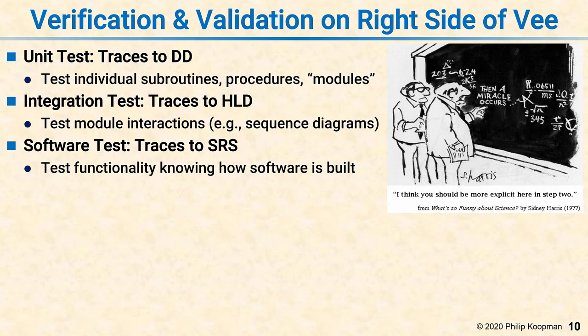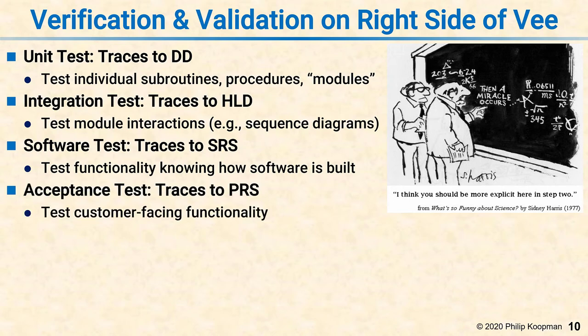Beyond that is the acceptance test. That traces to the product requirement spec. So the software test is an engineering test — does the software do what we wanted it to do? The acceptance test tells you whether the customers are happy with what it did. The engineers might have built something that works perfectly, but it's not what the customers wanted. Or the customers might have a way of using it that the engineers didn't really think about. That's what the acceptance test is about: making sure the customers will be happy with the output.